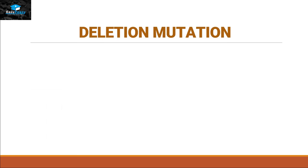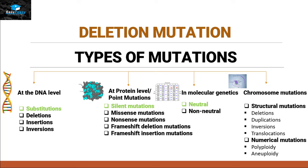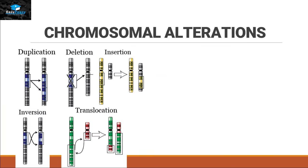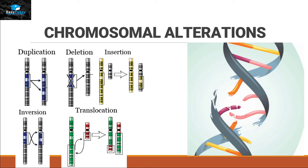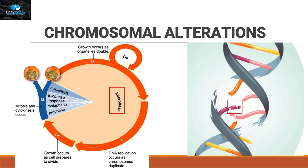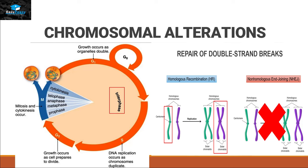Deletion mutations under the types of mutation fall under four different categories: at the DNA level as deletions, at the protein level as frameshift deletion mutation, in molecular genetics as non-neutral mutations, and in chromosome mutations as structural mutations. The structural deletion is also changing the structure of the chromosome and it is usually occurring by double-strand DNA damage, because we can lose part of a nucleotide in that scenario. DNA double-strand breaks usually occur when the cell is in interphase, and the DNA repair system will work when the cell divides, either in mitosis or meiosis stage.